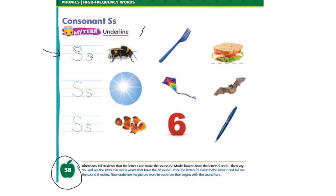Okay, the first picture you see is a bee, fork, sandwich. So which one of these pictures begin with S? Definitely the sandwich. So I underlined the S sandwich. Now look at the second row and do it by yourself and the last one as well. When you finish, take a picture of your work and send it to me. Thank you!